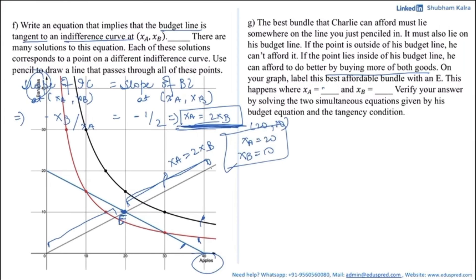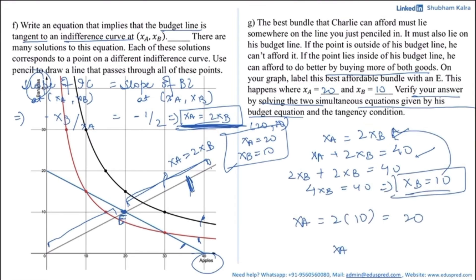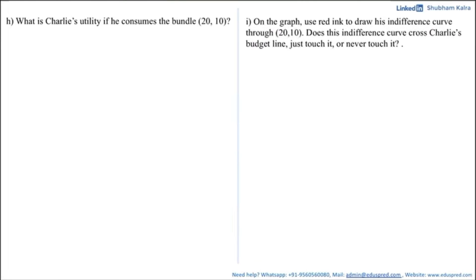To verify, we solve two simultaneous equations: the tangency condition xa = 2xb, and the budget equation xa + 2xb = 40. Substituting the first into the second gives 2xb + 2xb = 40, so 4xb = 40, meaning xb = 10. Substituting back, xa = 2 × 10 = 20. We again get xb = 10 and xa = 20, which matches the graphical coordinates, so the answer is verified.